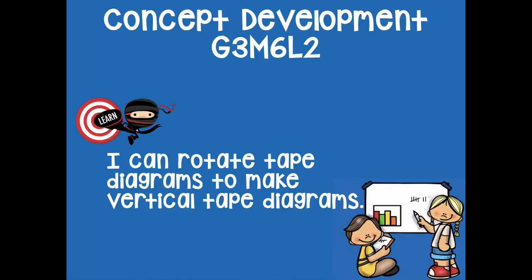Our learning goal says: I can rotate tape diagrams to make vertical tape diagrams. Friends, we're very used to making tape diagrams that are horizontal and go from side to side. Well, today we're going to flip them on their side and make them vertical, going up and down. We're going to use this lesson to help us make connections to another type of graph in an upcoming lesson.